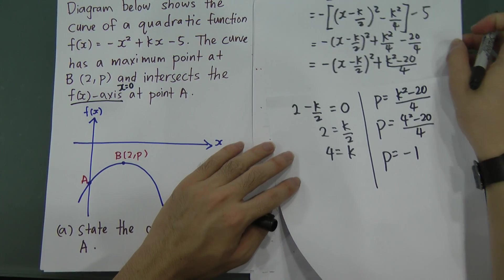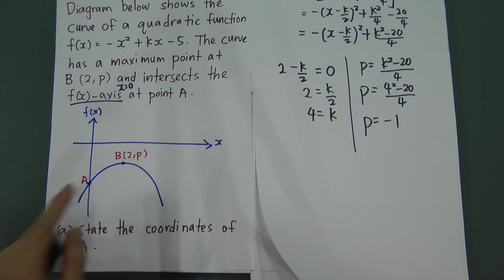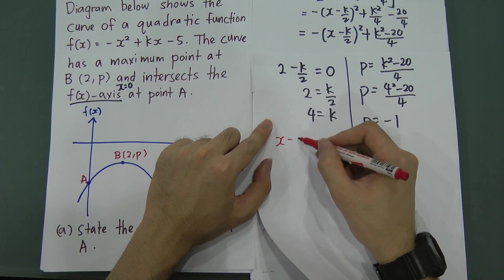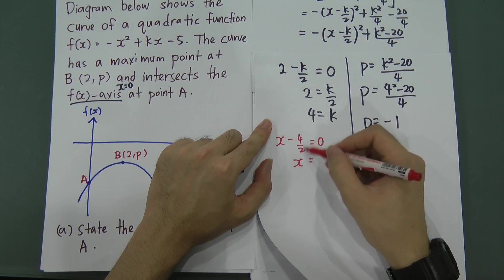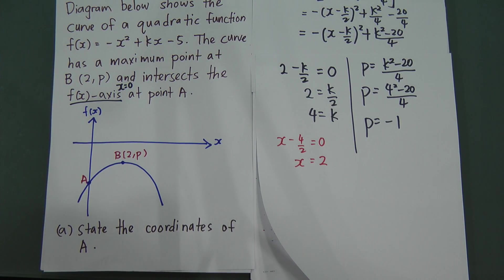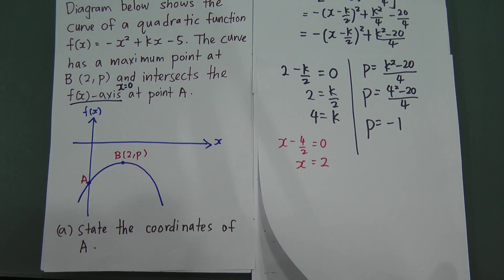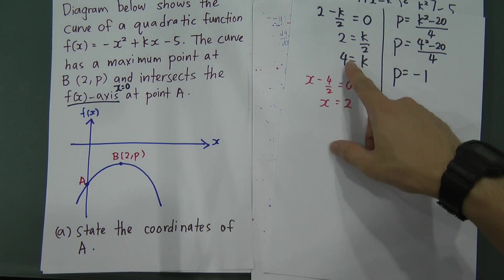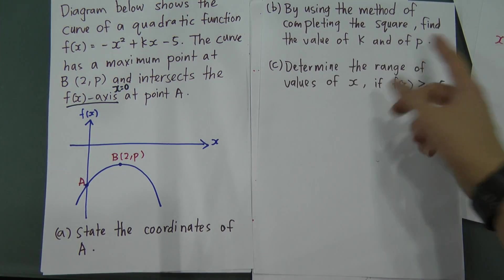To verify: substituting k = 4 gives x - 4/2 = 0, so x - 2 = 0, meaning x = 2. This confirms the maximum point is at x = 2, as given. Part B is done — completing the square gives k = 4 and p = -1.